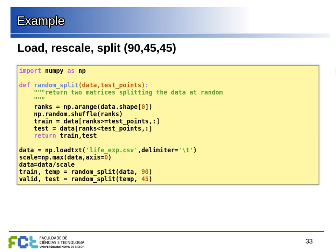Now we split into training, validation, and test. We split 90 points for training and 90 for a temporary matrix, then split that temporary matrix 45 each way, giving us 90 points for training, 45 for validation, and 45 for test.